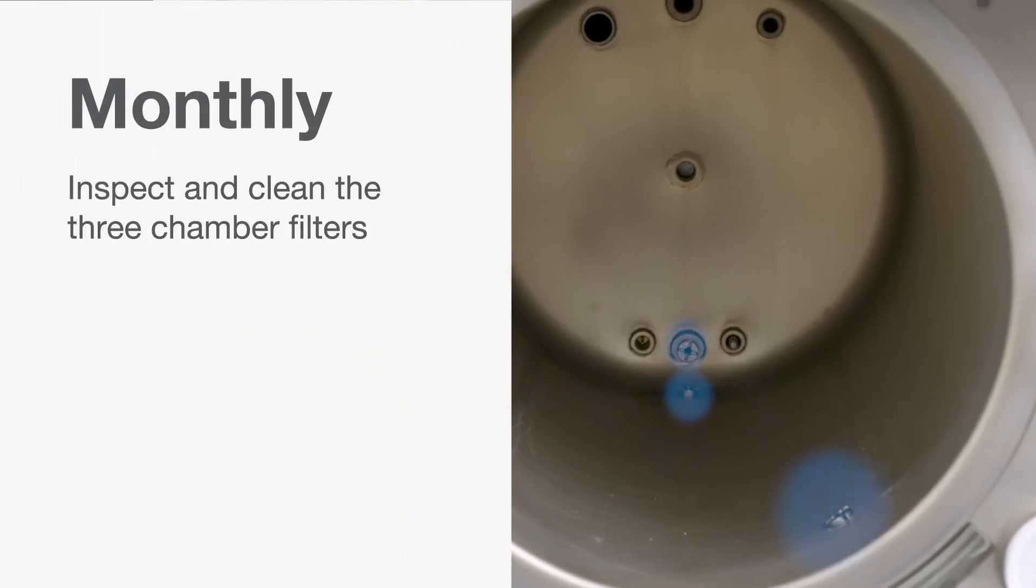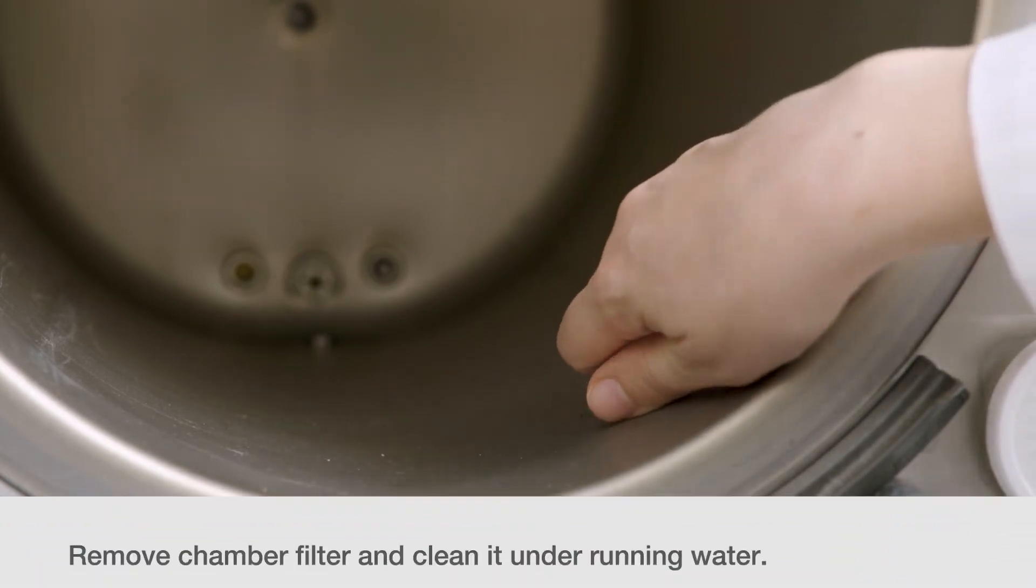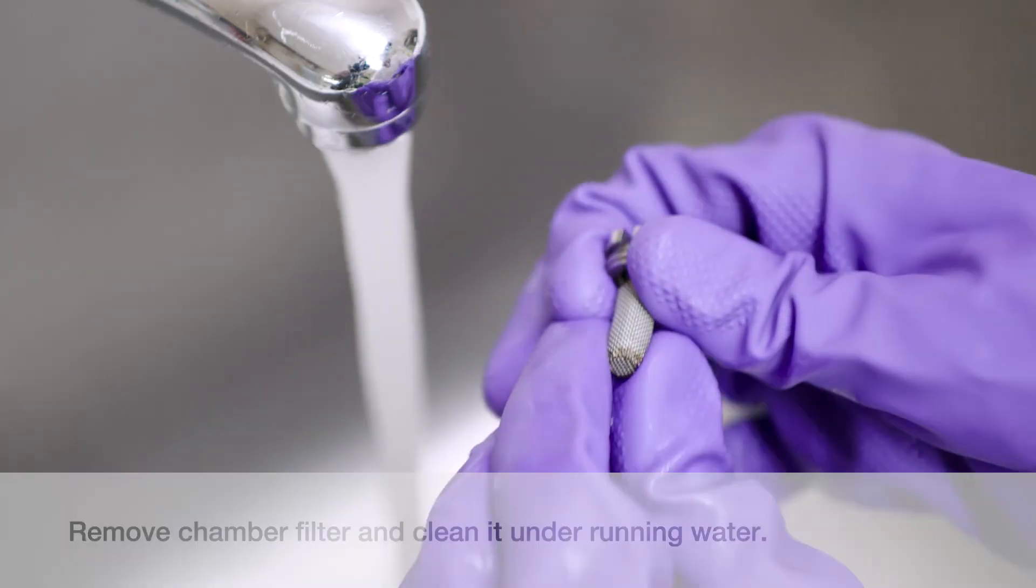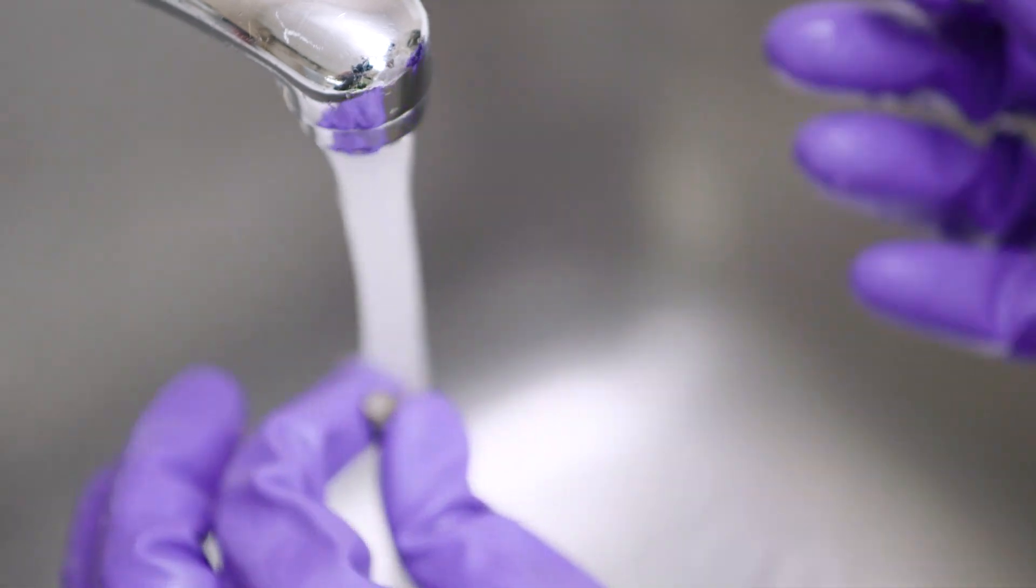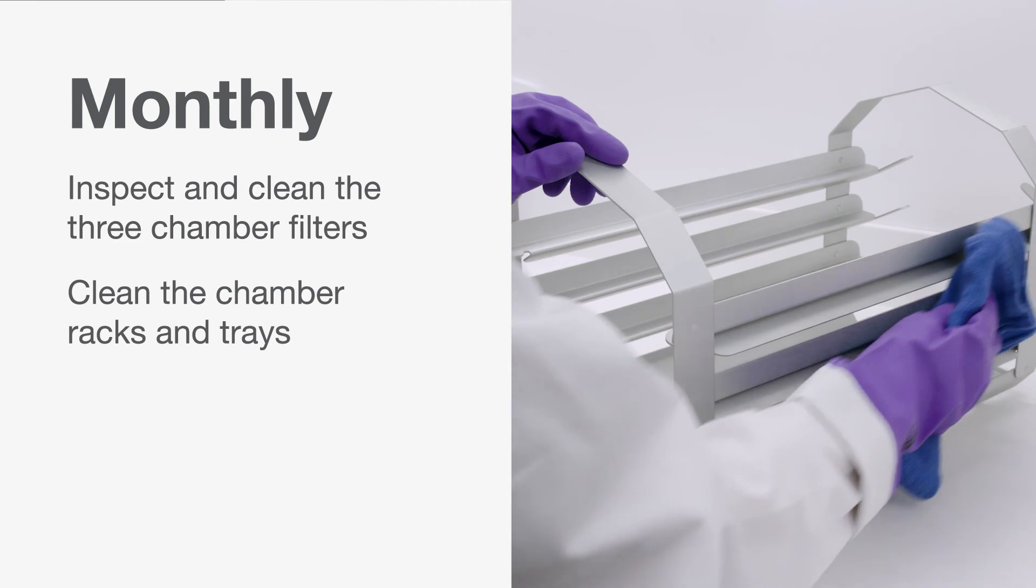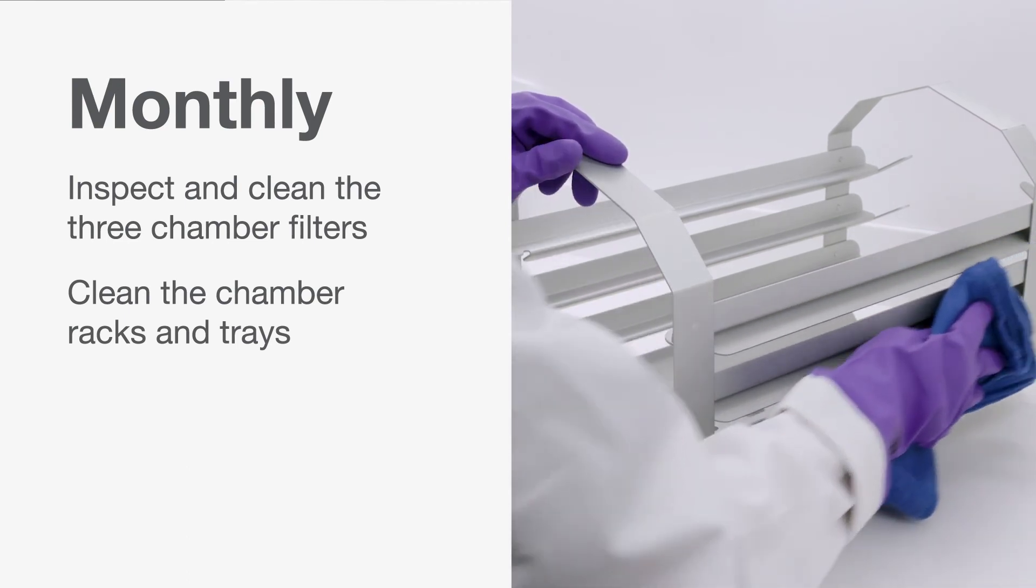Every month, inspect and clean the three chamber filters. To do this, remove the chamber filter and clean it under running water. Clear the mesh of debris. If the debris cannot be removed, replace the filter. Clean the chamber racks and trays every month with a lint-free, water-dampened cloth.